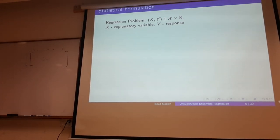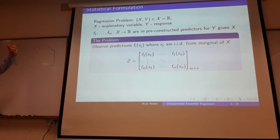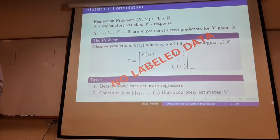So that's the problem. Let's put it under a clear statistical formulation. I'm going to talk about the regression problem. So I have x, some explanatory variables, y my response, its real value. I have m pre-constructed predictors, algorithms. And I have this matrix Z, fi of xj. My task is to detect the most and least accurate regressors, construct an ensemble learner to better accurately estimate y. And I want to do all of this without any label data whatsoever. Seems impossible. It is impossible unless I'm going to do some assumptions.